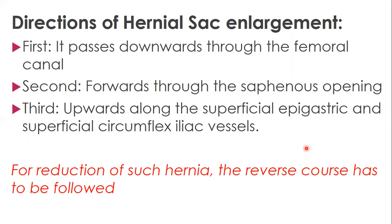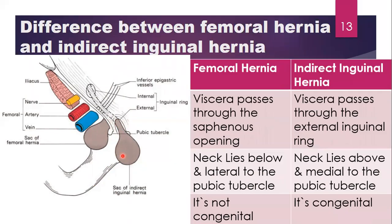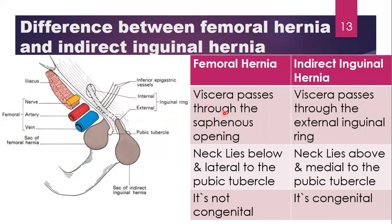It occurs because of increased abdominal pressure, so you can push it backwards along the same pathway. However, you must always be able to differentiate between femoral hernia and indirect inguinal hernia because they occur at about the same points. A femoral hernia passes through the saphenous opening, while the viscera of the indirect inguinal hernia pass through the external inguinal ring.